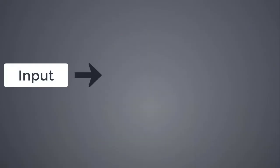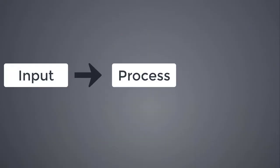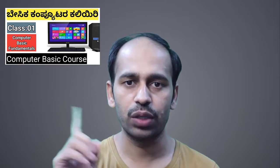So mainly, in this definition, the computer works in a three-step process: Input, Process, and Output. That is why the computer's basic working process is these three steps.